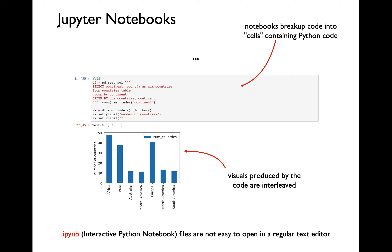Unlike the .py script mode, which can be edited using any text editor, the Jupyter notebook cannot be edited using a simple text editor. That is where the software Jupyter comes into play. You will have to use Jupyter in order to edit your notebook code or to run your notebook code. Another key difference between the regular .py script and the notebook is that you can split up your code into individual sections by using the cell structure.